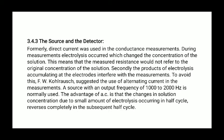Source and detector. Formally, direct current was used in the conductance measurement. During measurement, electrolysis occurred which changes the concentration of solution. This means that the measured resistance would not be referred to original concentration of solution. Secondly, the product of electrolysis accumulating at electrode interfere with the measurement. To avoid this, F.W. Kohlrausch suggests the use of alternating current in the measurement.